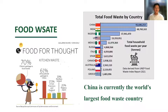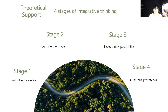My partner Tian Rui will now expand on stages one and two of the integrative thinking model. I'd like to introduce the theoretical framework for our presentation: integrative thinking. Roger Martin describes it as the ability to face constructively the tension of opposing ideas and, instead of choosing one at the expense of the other, generate a creative resolution in the form of a new idea that contains elements of the opposing ideas but is superior to each. It contains four stages, and we shall use them to generate optimal solutions for our wicked problem: kitchen waste.